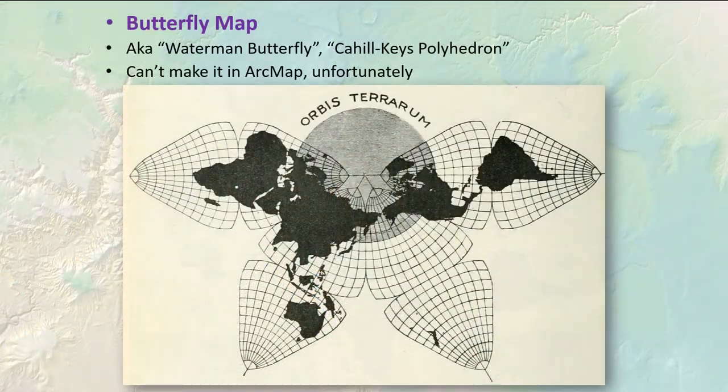The Waterman butterfly, also called the Cahill Keys, is a famous projection just because it is so aesthetically interesting. It is a pretty coordinate system. Sadly ArcGIS doesn't have this as an option — I really like it.